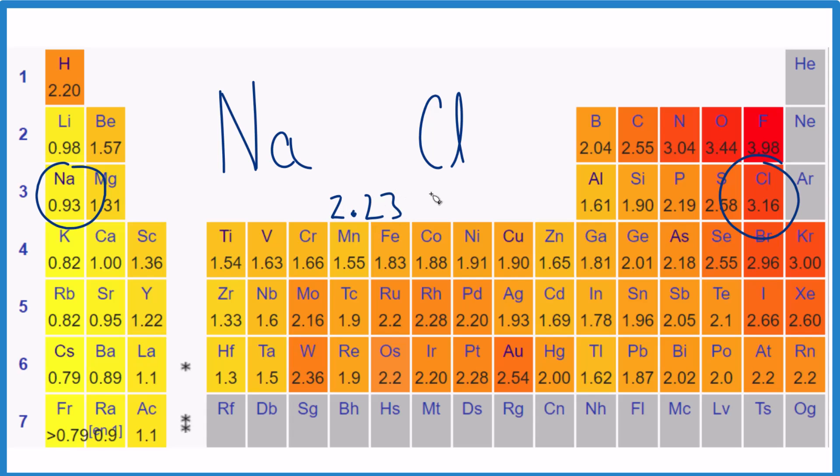So when the difference is over 2, we say that this is an ionic compound. So this is going to be an ionic bond between the sodium and the chlorine.